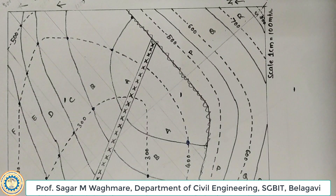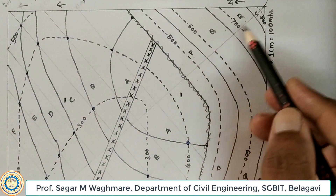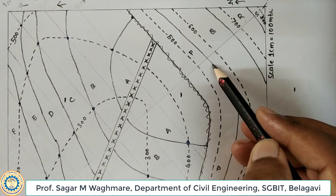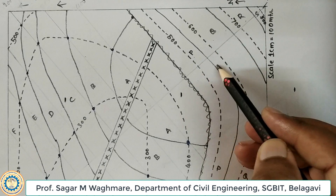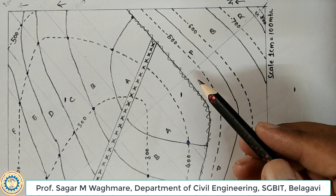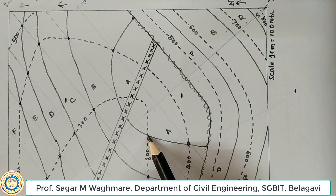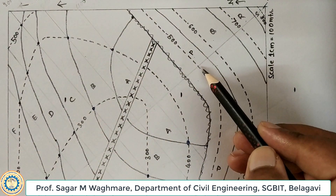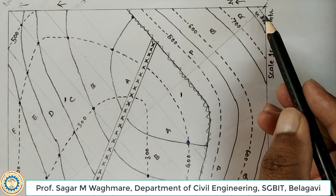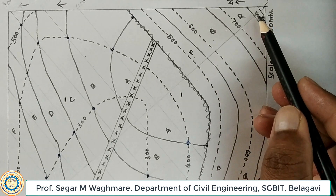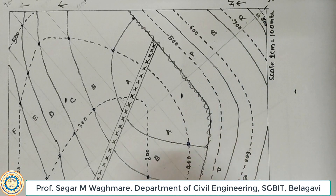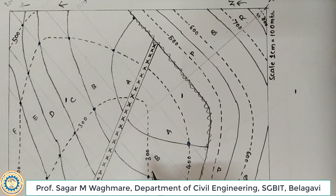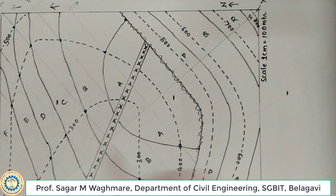If you observe the PQRS series, the bedding planes and contour lines are not cutting each other — they are not cutting each other. But in the ABCDE series, the bedding planes and contour lines are cutting each other. This means the PQRS series is horizontal in nature, unlike our first map, while ABCDEFG is inclined in nature because bedding planes and contour lines are meeting each other.